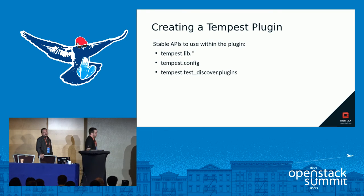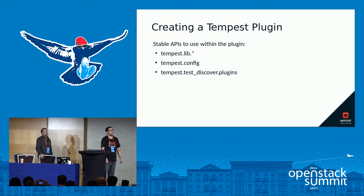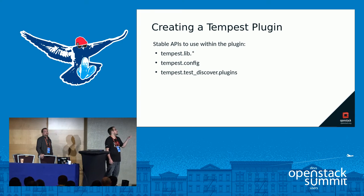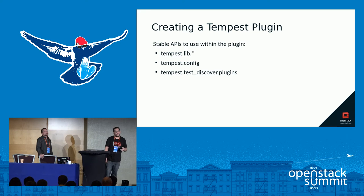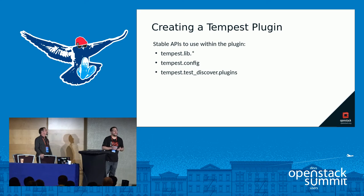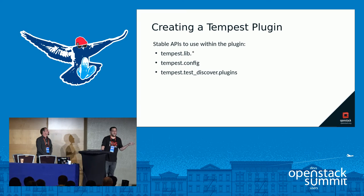How do I create a Tempest plugin? The stable APIs you need to import are: Tempest.lib, Tempest.config, and Tempest.discover. Tempest.lib contains the service clients and stable interfaces, so those won't change. If you were previously tying your plugin to a specific commit of Tempest, that shouldn't be needed anymore, because you're using the stable interfaces. Tempest.config is basically the Tempest configuration file, and Tempest.discover handles discovery for all the plugins.